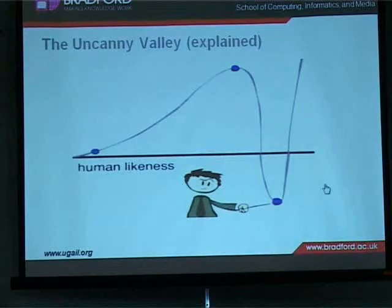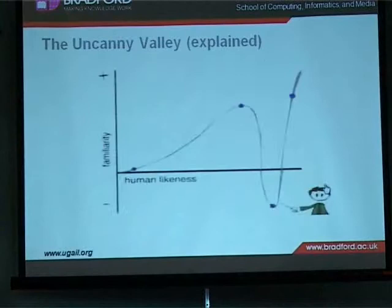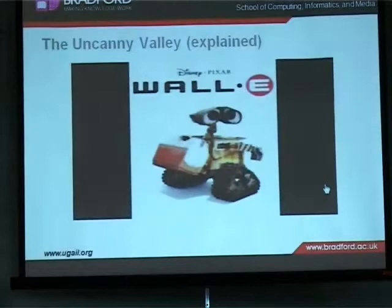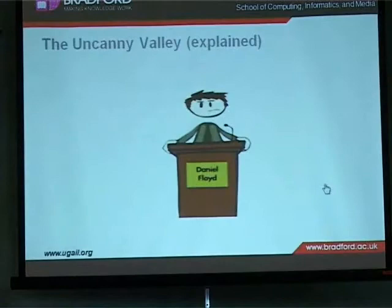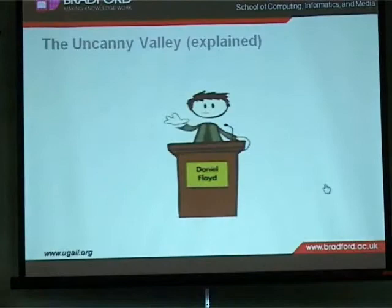Past this point, eventually the object will become indistinguishable from human beings and we'll be okay with it again. That area right down there is the uncanny valley. The idea is that if an object is clearly not human, its human-like characteristics will stand out and appeal to us. But if the object is almost but not quite human, its non-human characteristics are all we're going to see. We know what a human looks like — we see them every day — so when something is off, we know it, and it's unsettling.